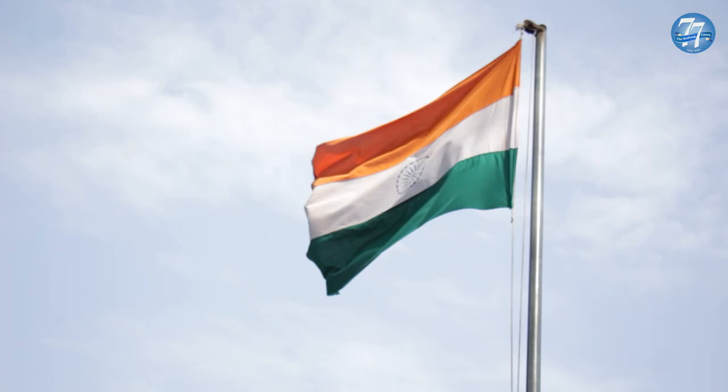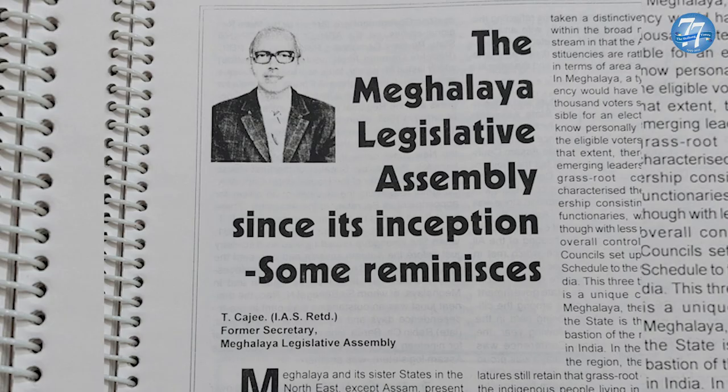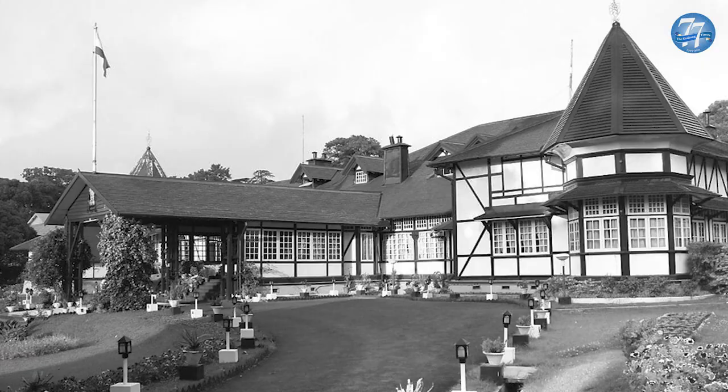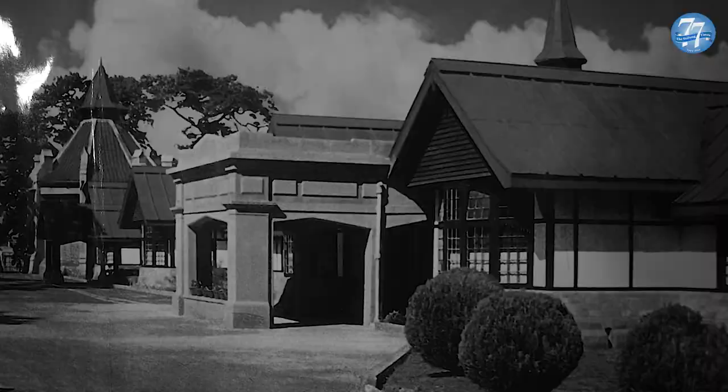The foundation stone of the main structure was laid by the second Governor of Assam, Sir William Sinclair Morris, on September 28, 1921. According to an article written by the former Secretary of the Meghalaya Legislative Assembly, T. Kaji, before 1921, the composite Assam Council would sit at the Raj Bhavan Hall, but the government insisted that the new council meet in a building consistent with its dignity and importance.